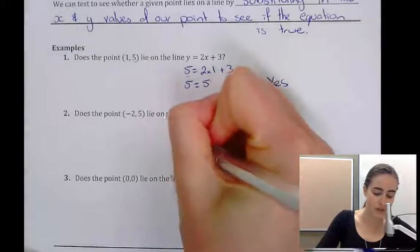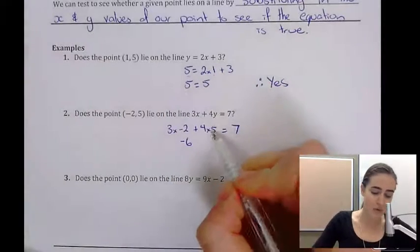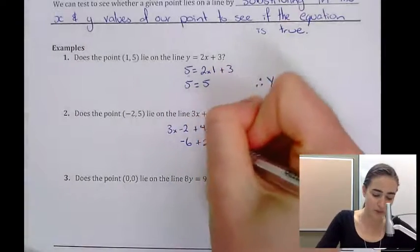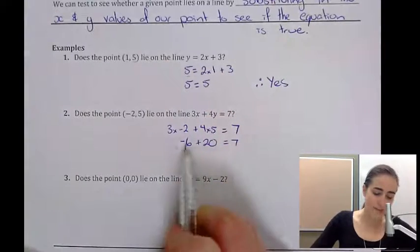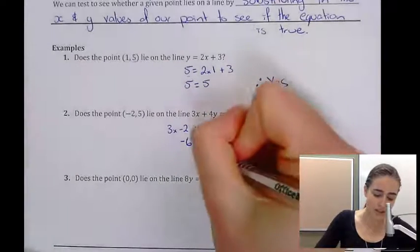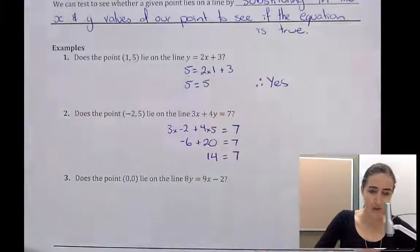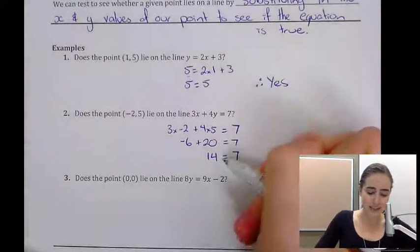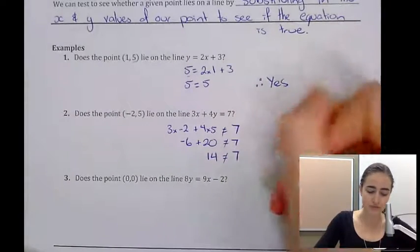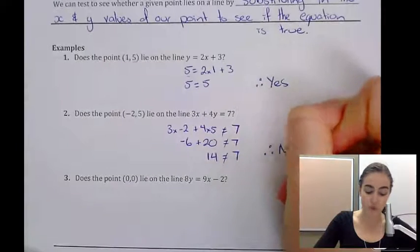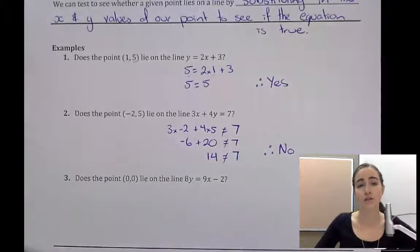3 times minus 2 would be minus 6 and 4 times 5 would be 20. Minus 6 plus 20 would give us 14. Now 14 clearly isn't equal to 7, so therefore no, the point does not lie on the line.